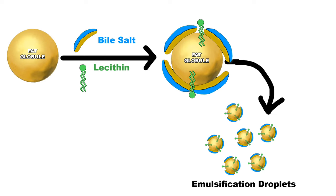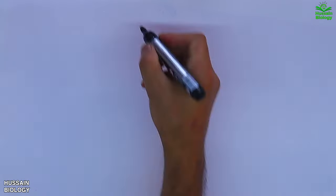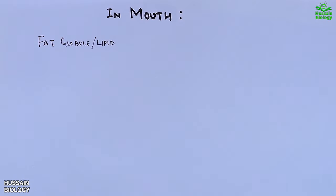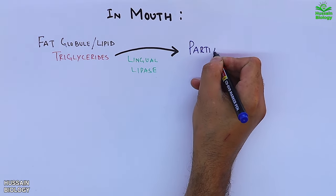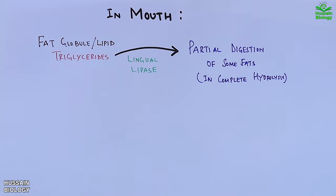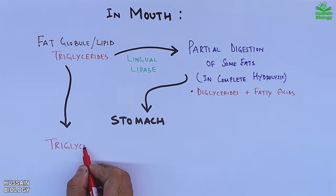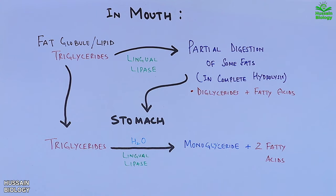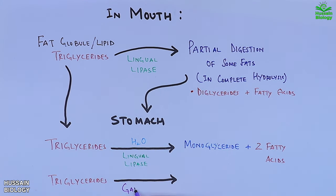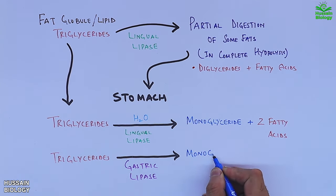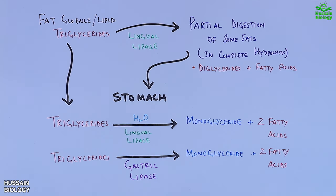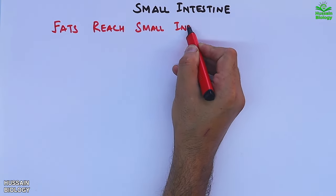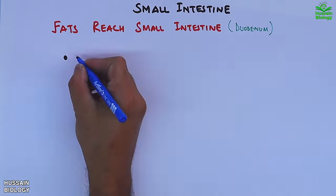Now let's see the mechanism in detail. First, in the mouth, the fat globule or lipid droplet — made up of triglycerides — is acted upon by lingual lipase, giving partial digestion of some fats, which is incomplete hydrolysis. Then in the stomach, these fats are again acted upon by lingual lipase. Gastric lipase is also released from gastric chief cells and acts on triglycerides, converting them into monoglycerides and two fatty acids.